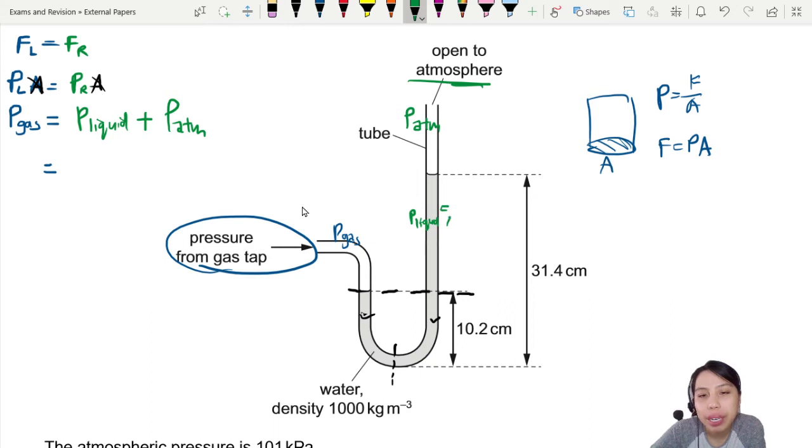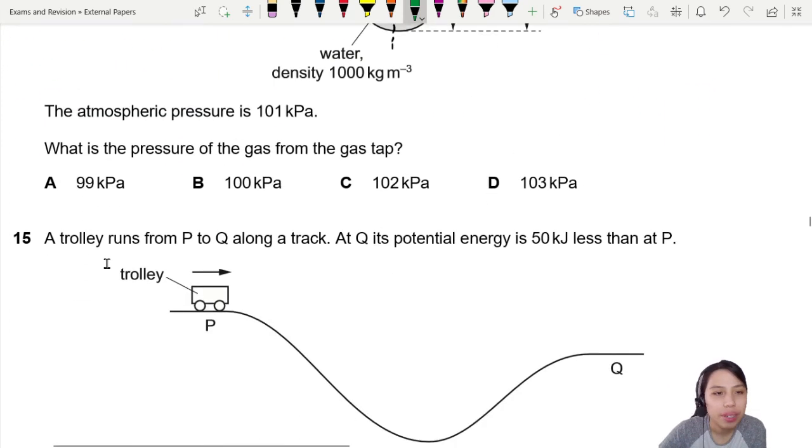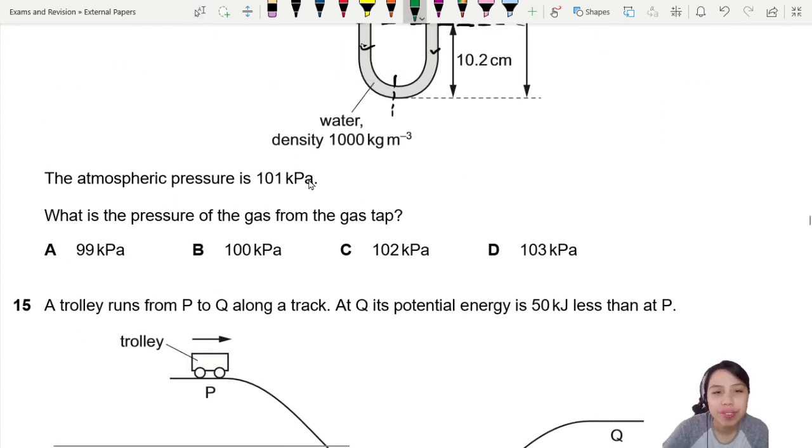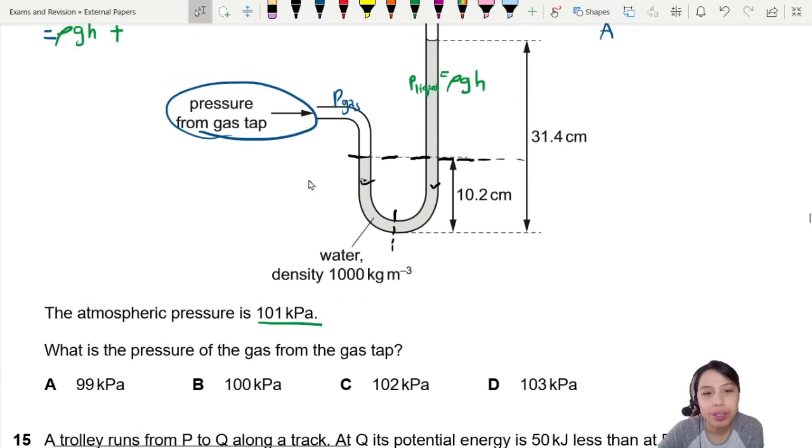Pressure of liquid, this column of liquid can be calculated by ρgh. What is the ρgh right here? Atmospheric pressure is given to us down there, 101 kPa.